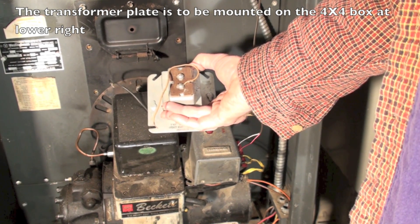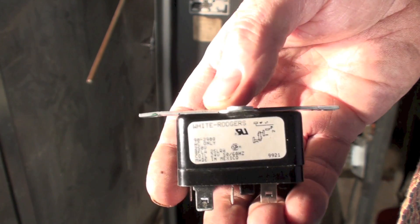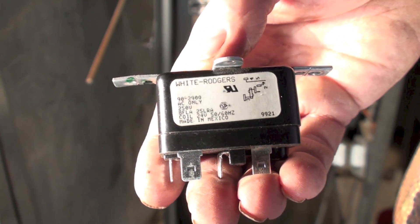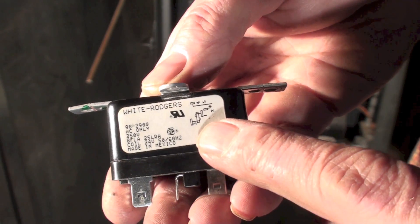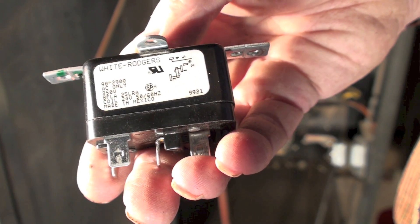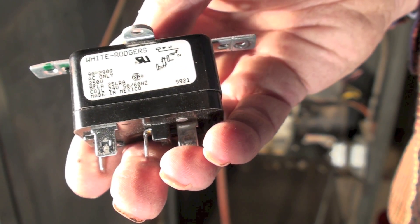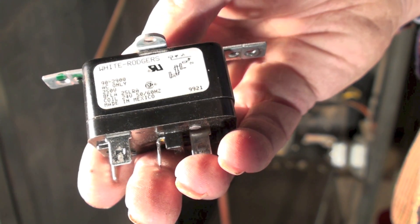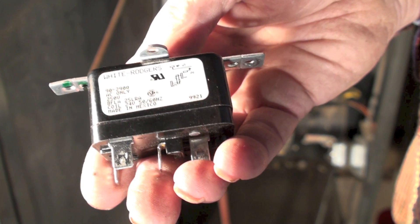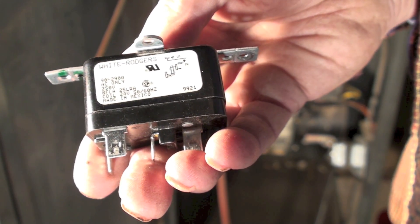Here I'm showing you a little relay, and this gives you a little diagram right there. So the coil is between three and one, and it's a single pole single throw. So between four and two we have a switch.